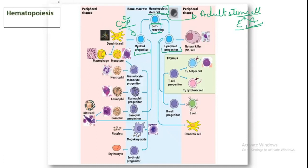From the myeloid progenitor, cells can become granulocyte-monocyte progenitors, eosinophils, basophils, megakaryocytes (which produce thrombocytes/platelets), and erythrocytes (RBCs). Mast cells also come from the myeloid progenitor. So the majority of blood cell types originate from the myeloid progenitor.